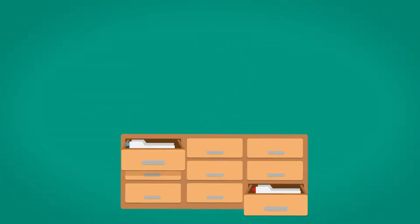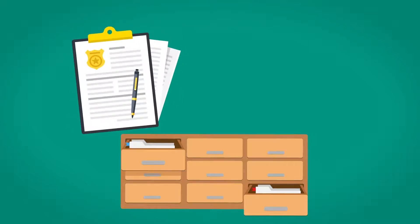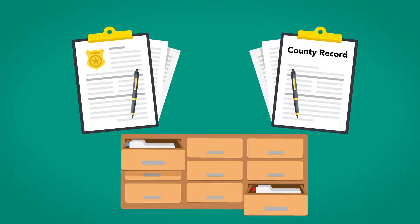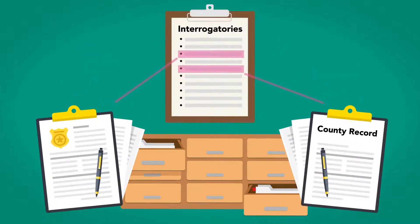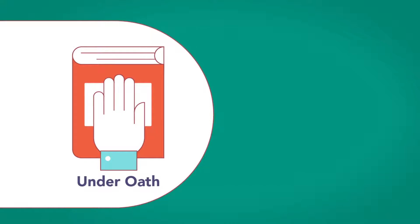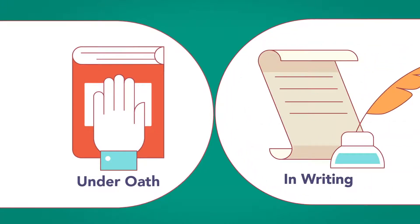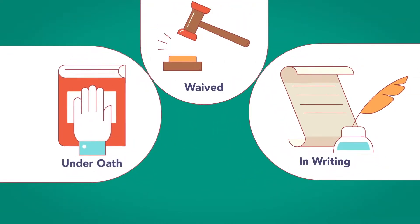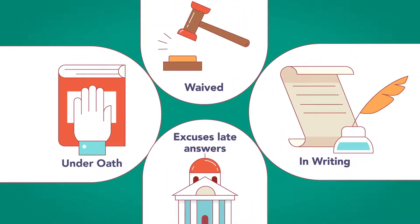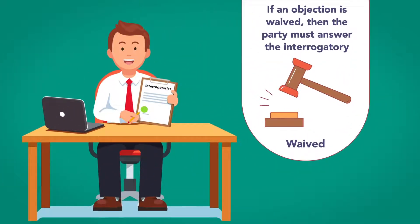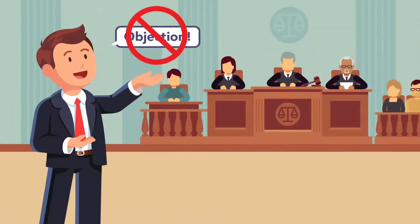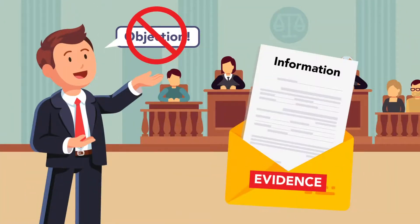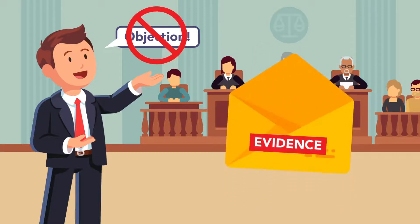For example, if a party asks for information contained in police reports or records kept at the county records office, the responding party can simply reference those records in the interrogatory rather than going through the effort to obtain and copy them. Answers to interrogatories are provided under oath. All objections to interrogatories must be stated specifically in writing and in a timely fashion, or they are waived unless the court excuses late answers or objections for good cause. If an objection is waived, then the party must answer the interrogatory, and there can be no objection to the information later if opposing counsel wants to enter it into evidence at trial, as answers to interrogatories can be used at trial just like live testimony.